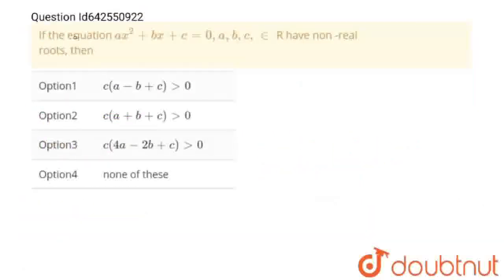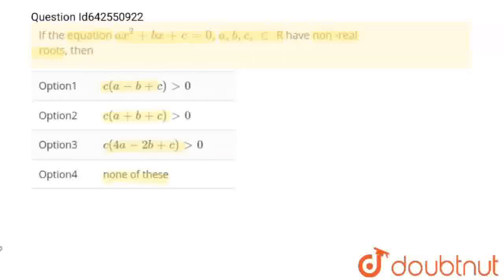Hello students. The question is: if the equation ax² + bx + c = 0, where a, b, c belong to R, has non-real roots, then which of the following options is correct? So let's solve this problem.